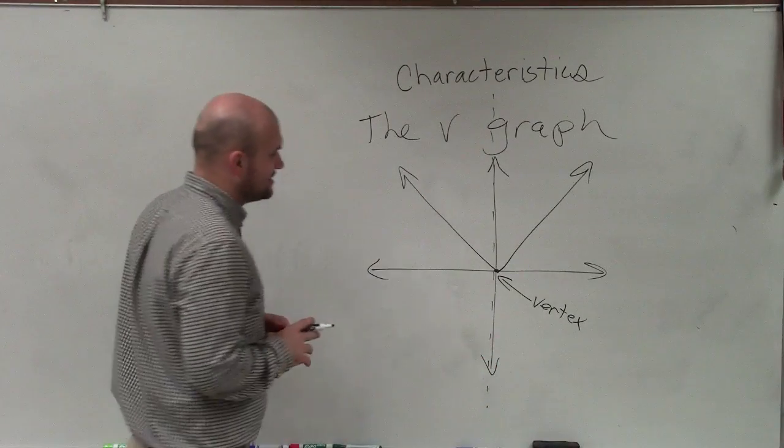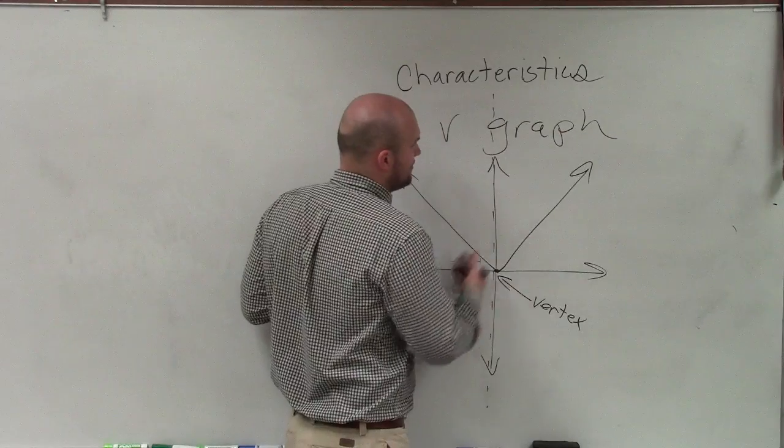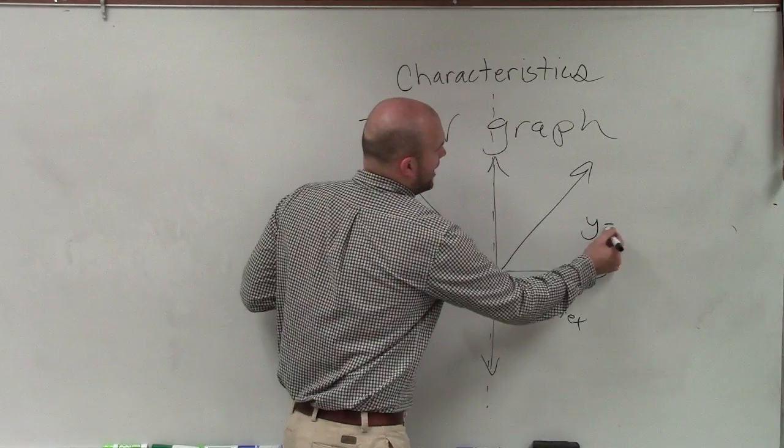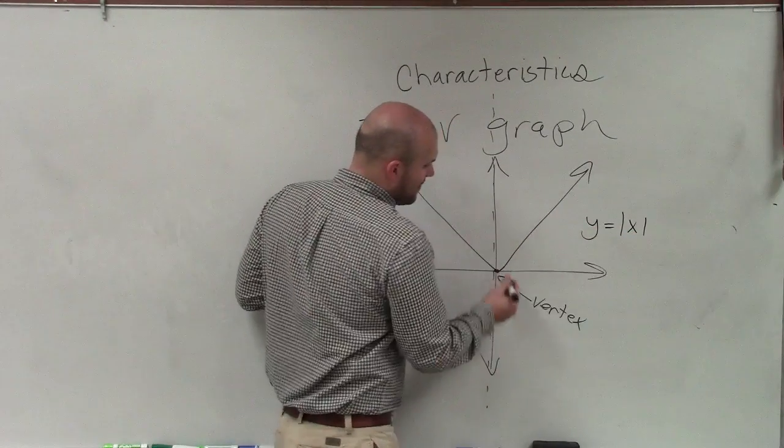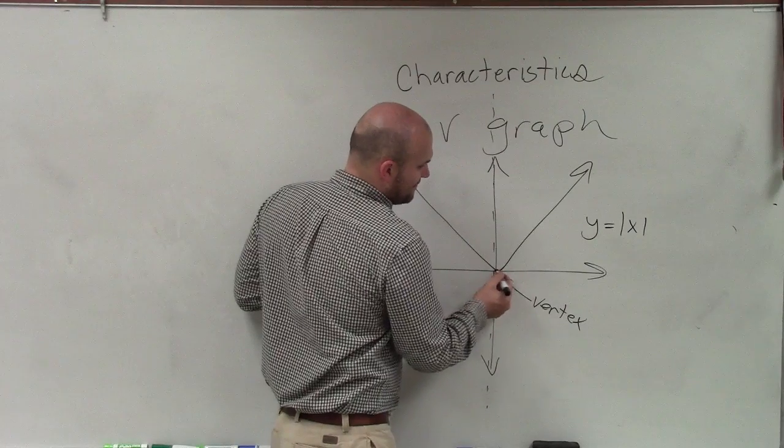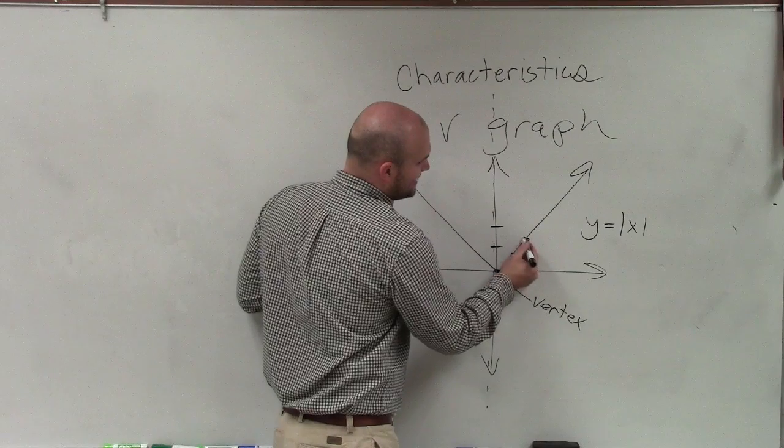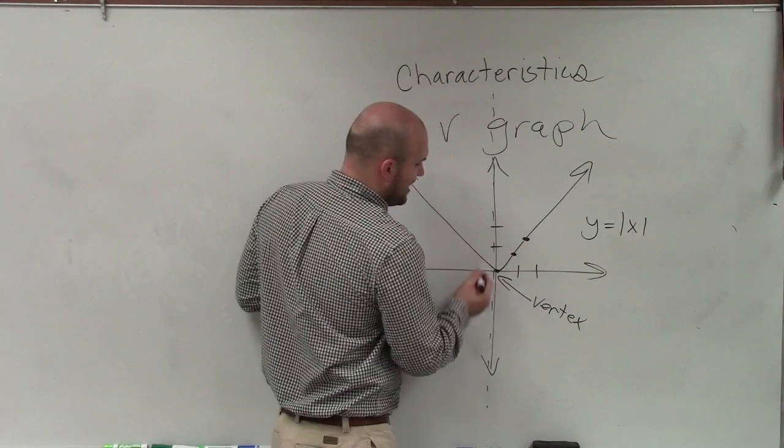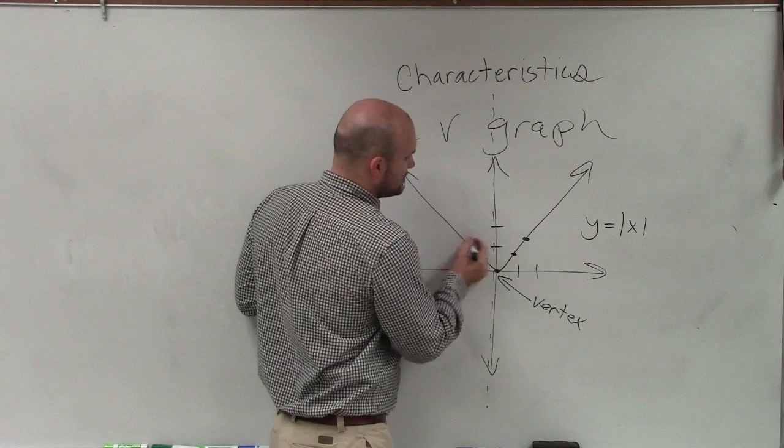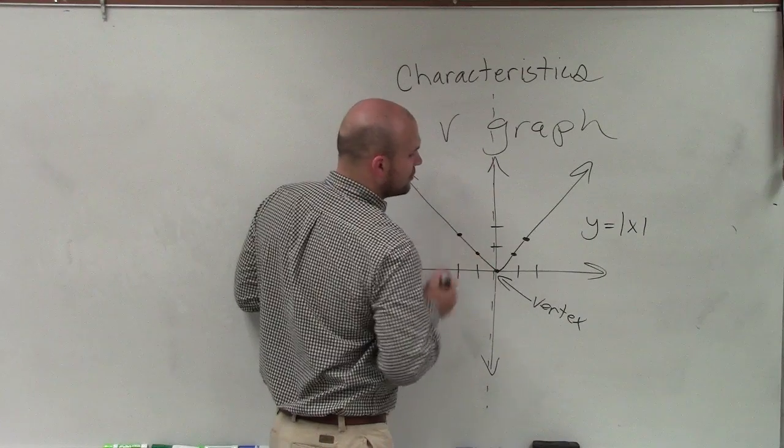The last thing I'd really like to point out to you is when we use a table of values for the equation, y equals absolute value of x, that my graph, the reason why it creates that V is because when I go over 1, I go up 1. Over 2, I go up 2. And I create these points of my function. And that's going to be the same for to the left or to the right.